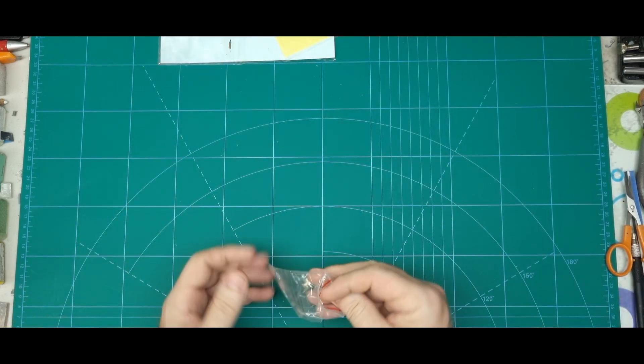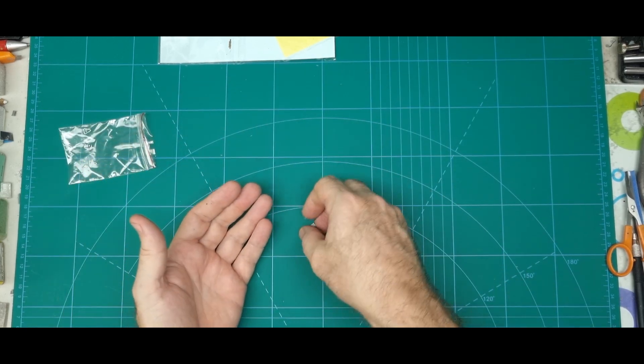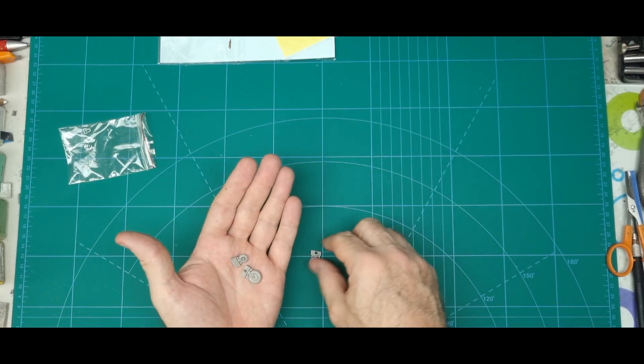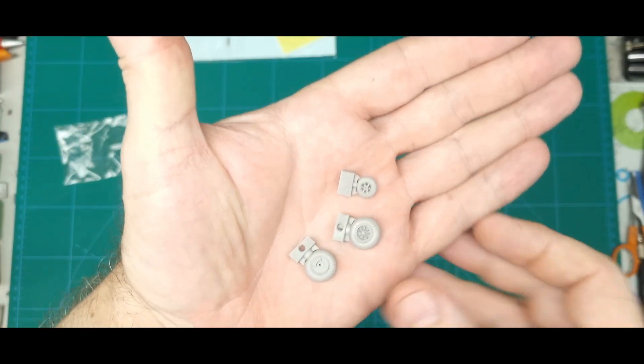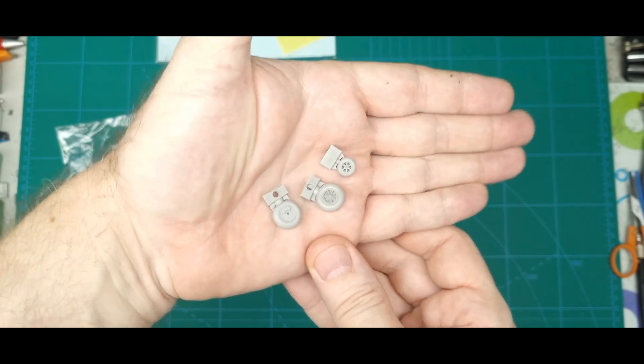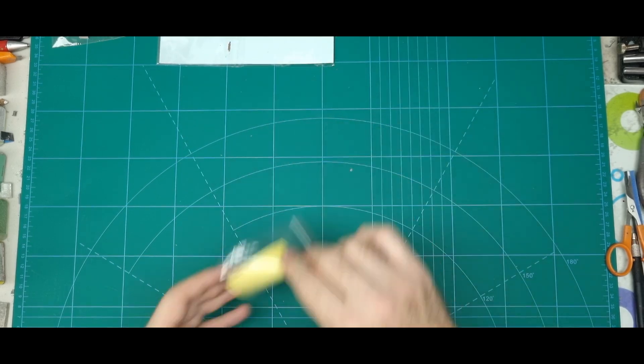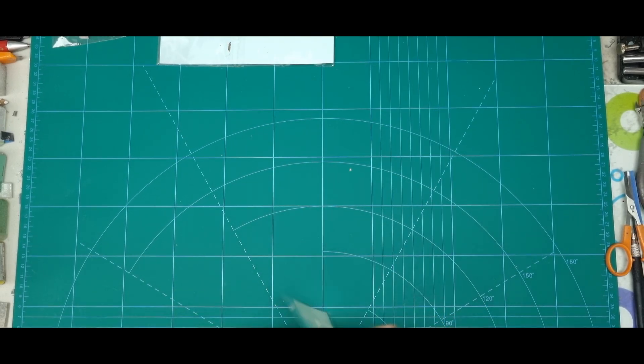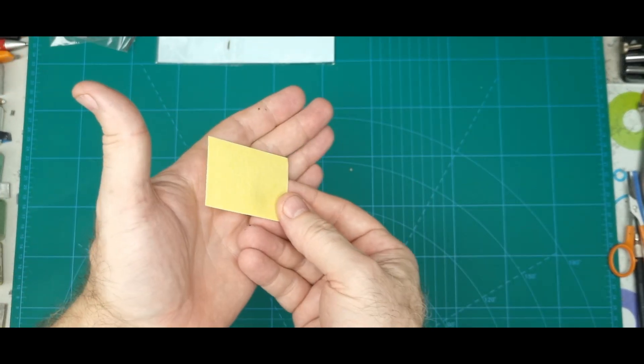I'll just start with these wheels. Always a winner in my book, resin wheels. Nice set. Might be able to see the, probably not, the cuts.